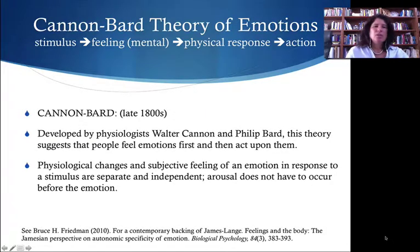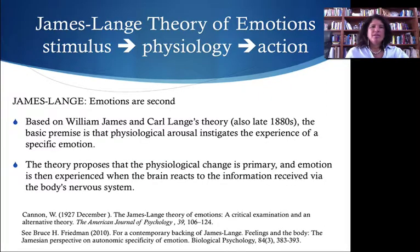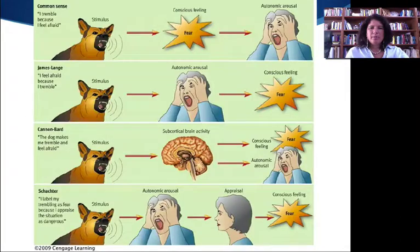We started off in the 1800s with a couple of really important theories that are still around today. The Cannon-Bard Theory of Emotions by Walter Cannon and Philip Bard basically suggests that people feel emotions first and then they act upon them. Then you had James-Lange — William James and Carl Lange's theory also in the 1880s — and they basically said that the physiology instigates an experience of a specific emotion.